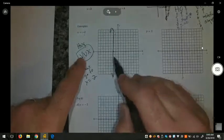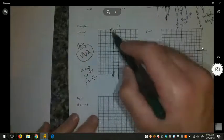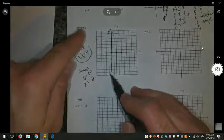A vertical line, an undefined slope, x equals a number. Every point on that line has an x-coordinate of negative 2.